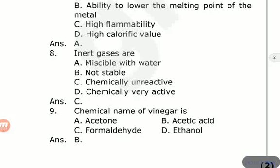Chemical name of vinegar is? Options are acetone, acetic acid, formaldehyde, ethanol. The answer is option B, acetic acid. The name of vinegar is acetic acid.